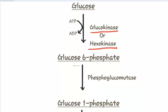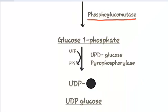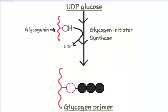Glucose-6-phosphate gets converted into glucose-1-phosphate, and this conversion is catalyzed by phosphoglucomutase. Now UDP-glucose, which is uridine diphosphate glucose, is formed from glucose-1-phosphate and UTP in the presence of the enzyme UDP-glucose phosphorylase.